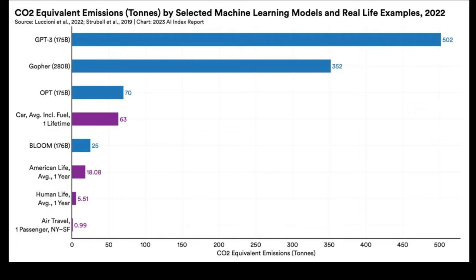We'll also talk about the downsides. For example, training ChatGPT-3 produced about 500 times the carbon dioxide of one passenger's air travel from New York to San Francisco — and about 100 times the carbon dioxide you'd expend being a human for a year. Is that a good trade-off? We'll talk about these ethical types of issues involving the training of these huge foundation generative models.